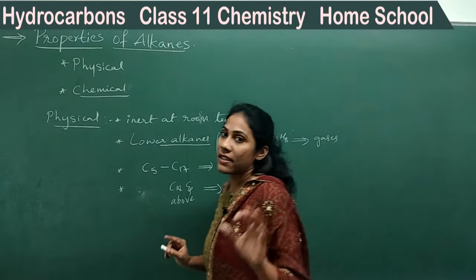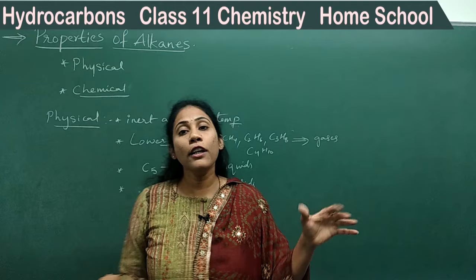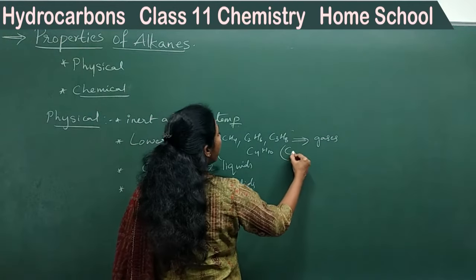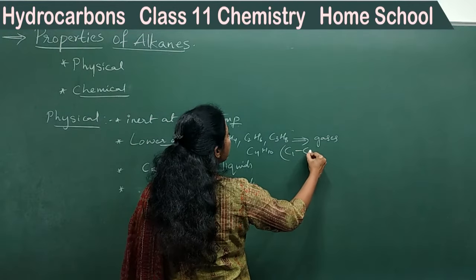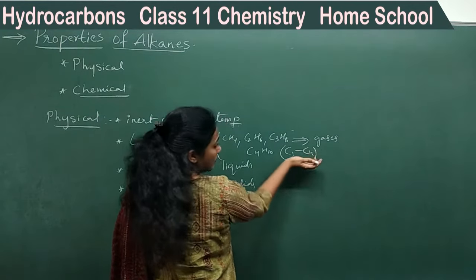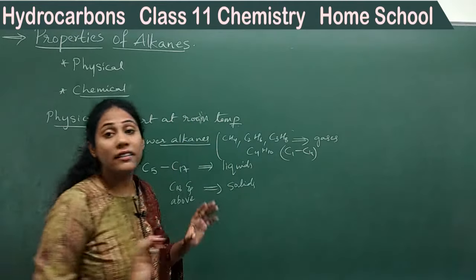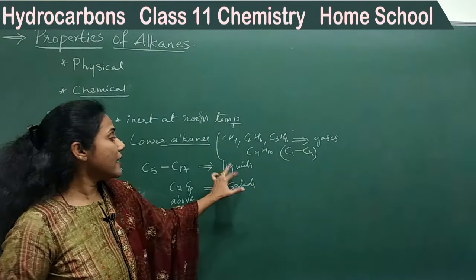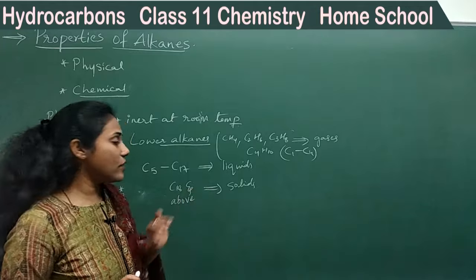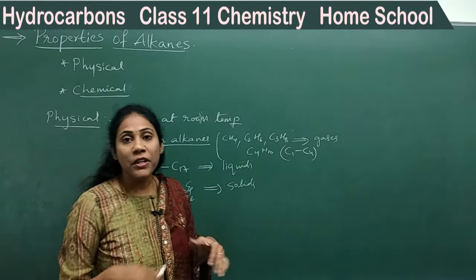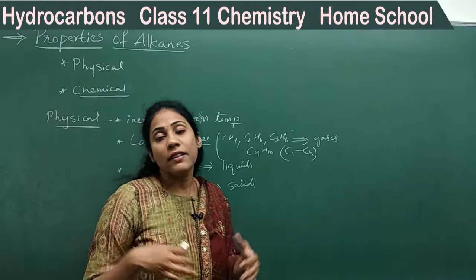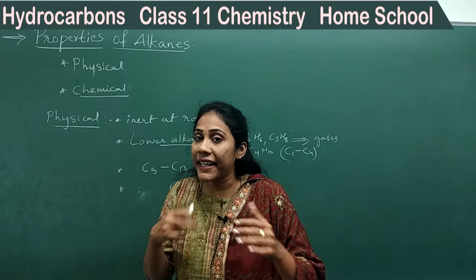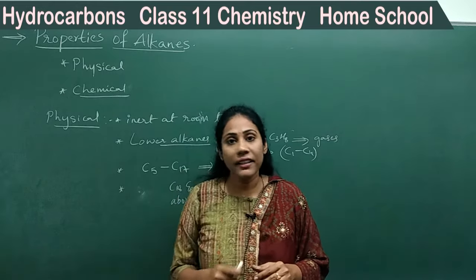So not all alkanes are gases. Only the lower members, C1 to C4, are gases. Middle alkanes, C5 to C17, are liquids and higher alkanes, C18 and above, are solids. This is how alkanes exist in nature.